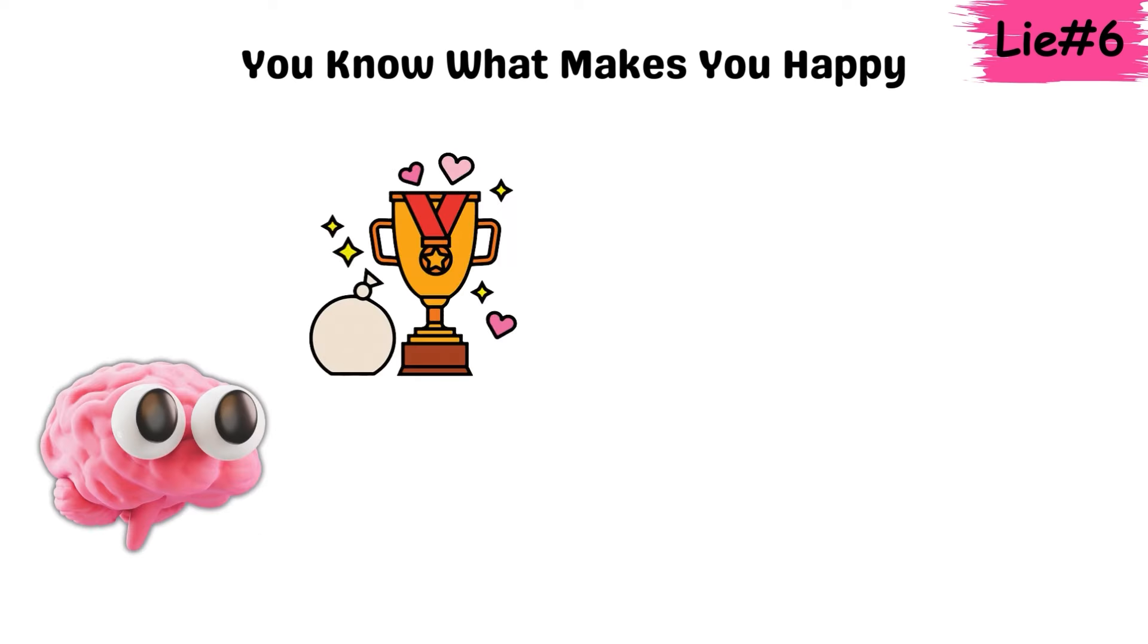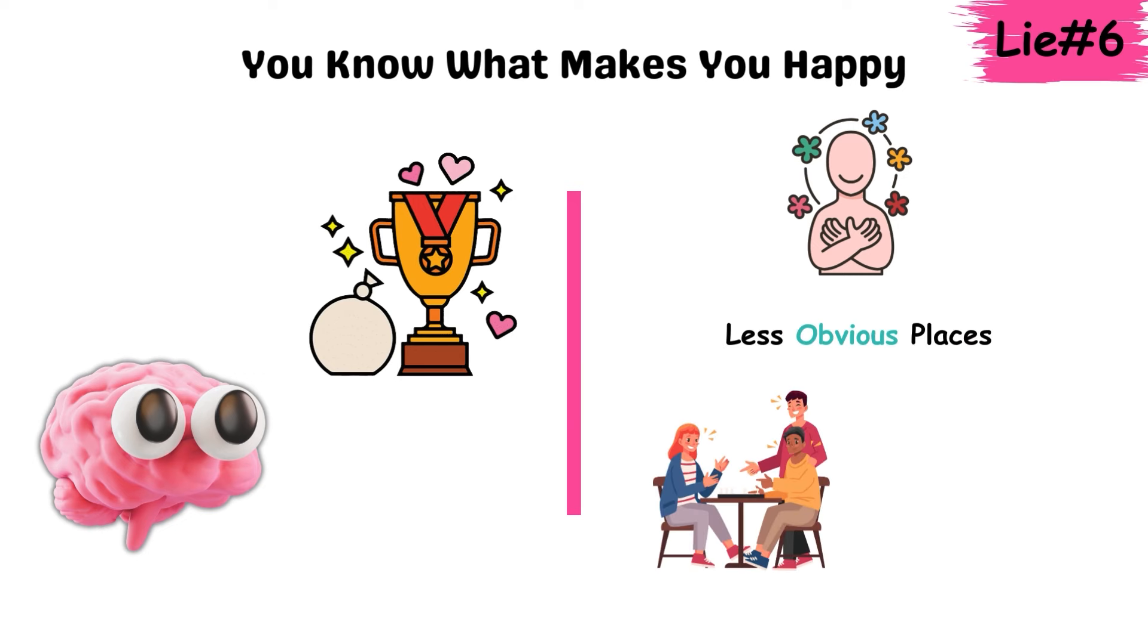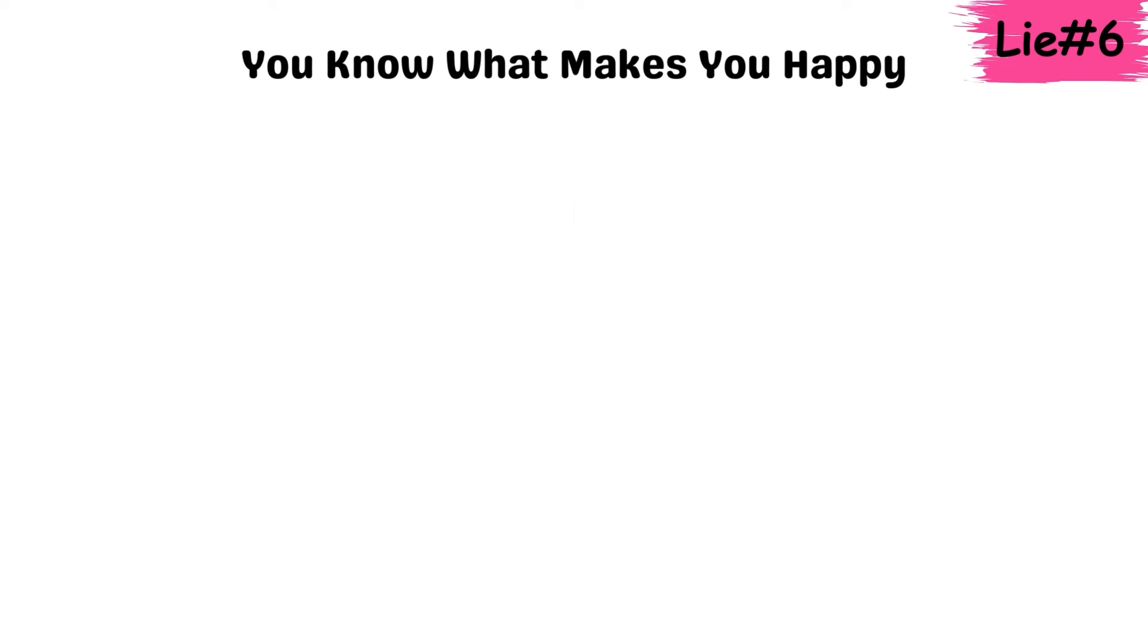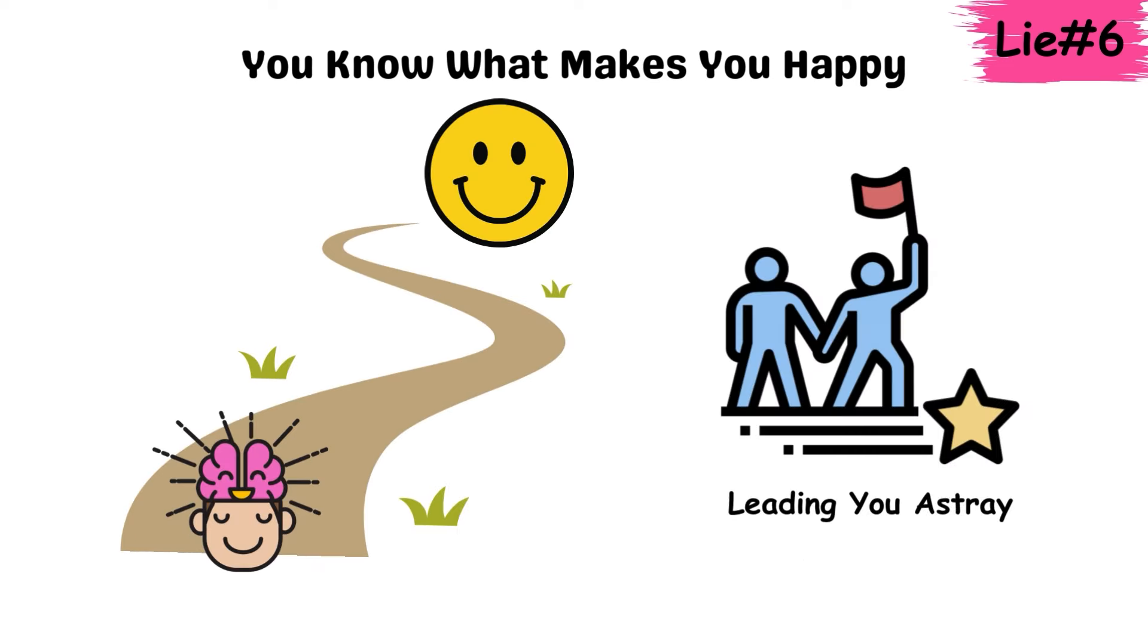The brain focuses on big rewards, but happiness is often found in less obvious places, like spending time with friends or engaging in a hobby. So while your brain convinces you it knows the path to happiness, it's often leading you astray.